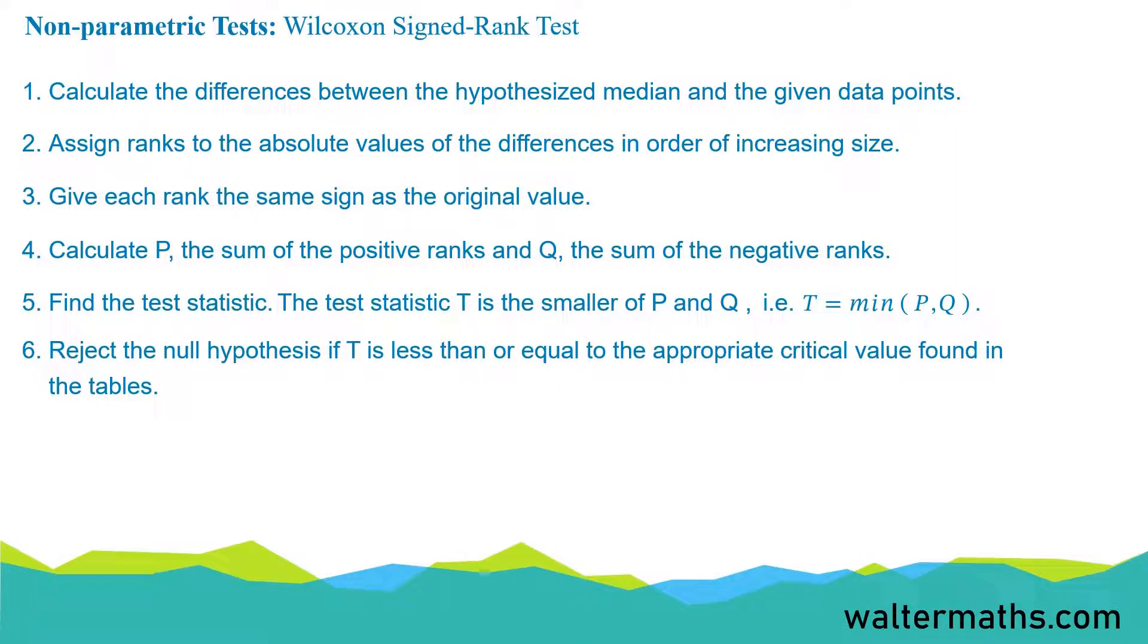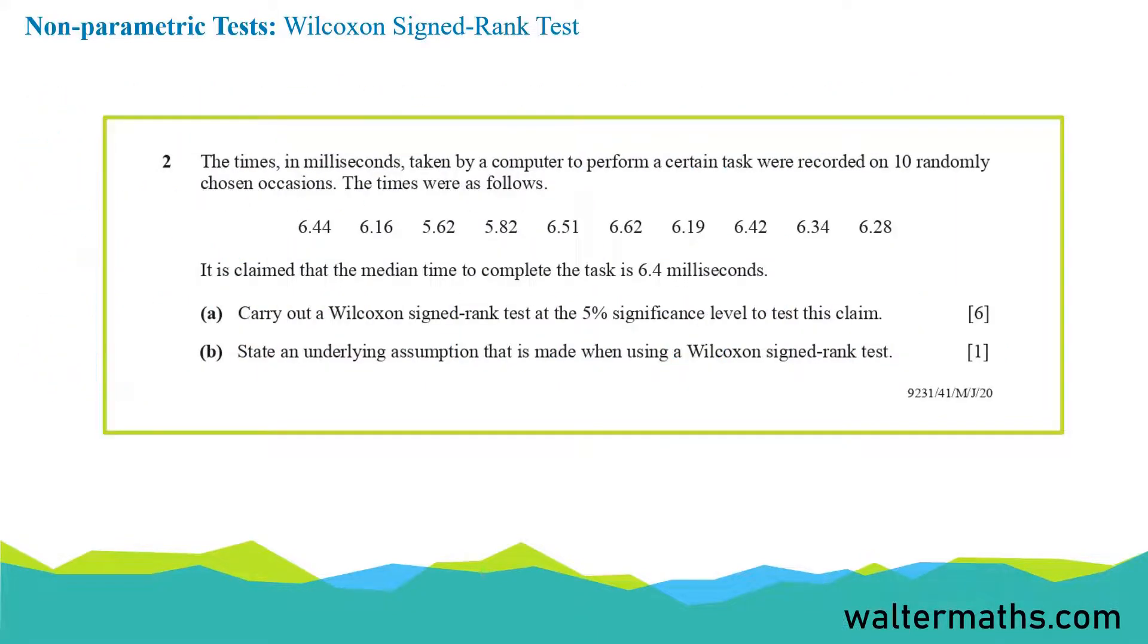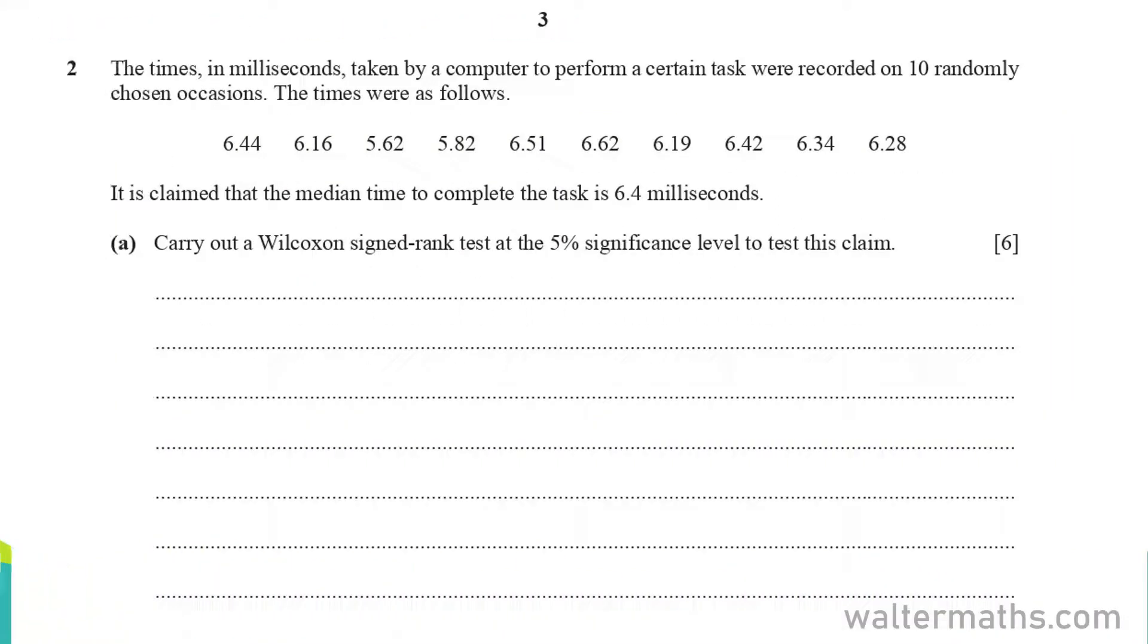So let us look at this question here. It says the times in milliseconds taken by a computer to perform a task were recorded on 10 randomly chosen occasions. The times were as follows. Here, it is claimed that the median time to complete the task is 6.4 milliseconds. So on part A, carry out a Wilcoxon signed rank test at the 5% significance level to test this claim.